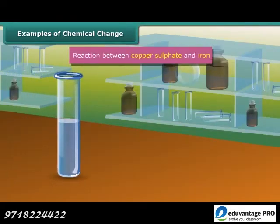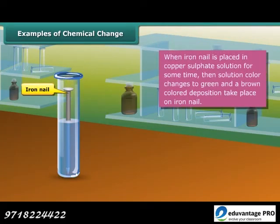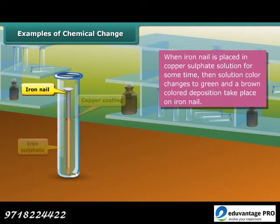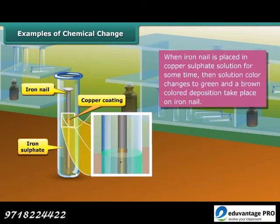You will see a blue colored solution. Put an iron nail in it. After some time the color of the solution changes to green and the nail is covered by a brown deposit. These changes are due to the formation of iron sulfate solution and copper.